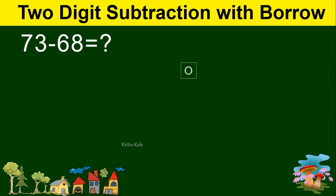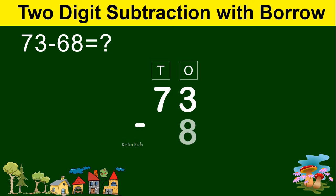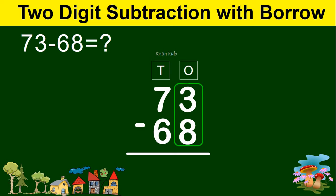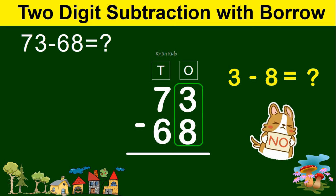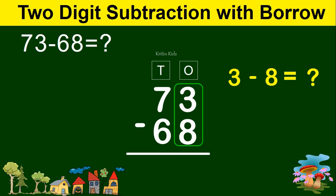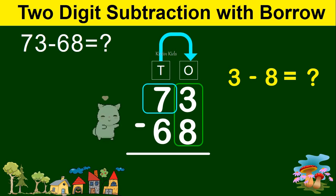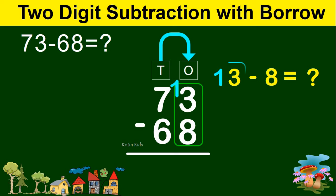Let's take one more example: 73 minus 68. Let's arrange them properly according to their place value. Under ones we have 3 and under tens we have 7. Likewise, 8 under ones and 6 under tens. Now let's start subtraction from the ones position. 3 minus 8 — can we subtract 8 from 3? No. So let's check — can we get a value from the higher position? Here we have 7, so we can take 1 from there. Our number becomes 13, and 7 becomes 6.